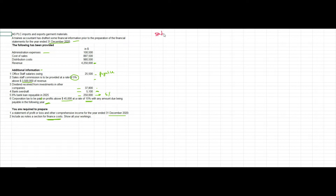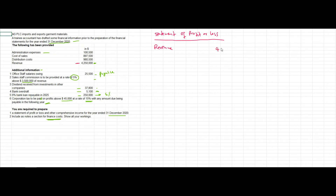Let's try to answer this question. We will start with the statement of profit or loss. First of all, we start with revenue. Revenue is given as 4,250,000, and there are no adjustments to be made for revenue, so we can take 4,250,000 straight away.